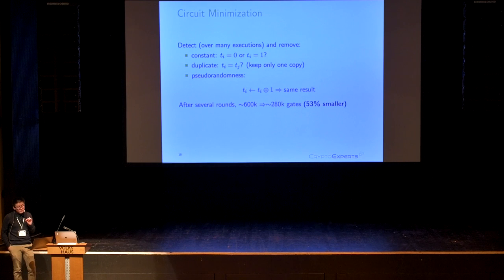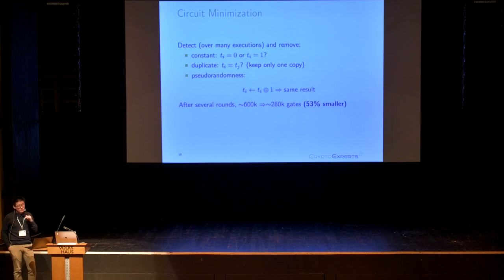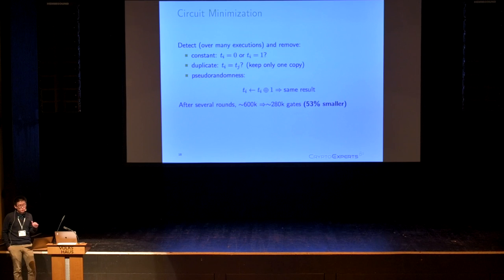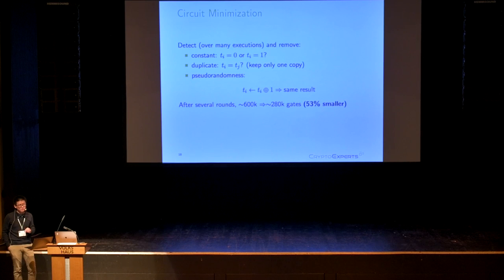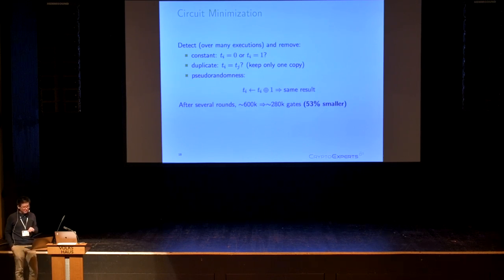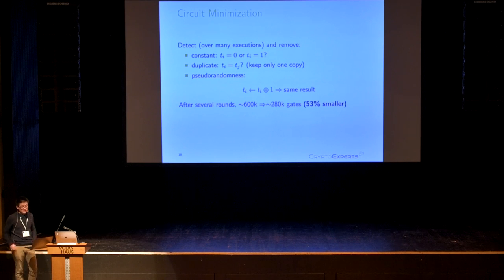Additionally, we try flipping an intermediate variable and compare the program output to whether it matches a normal execution. After many executions, if it always matches, we treat the variable as used for randomization and replace it with a constant value such as zero. After several rounds of detection and removal, the size of the circuit is halved.